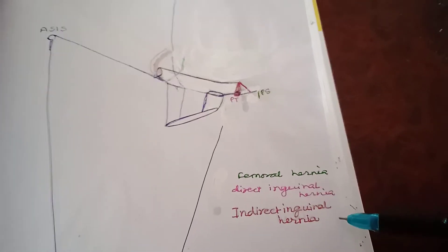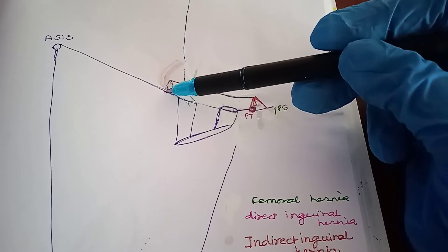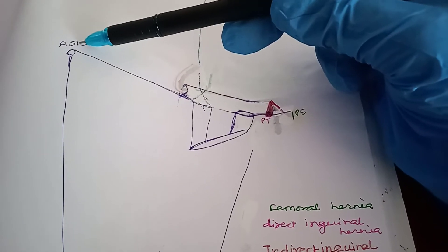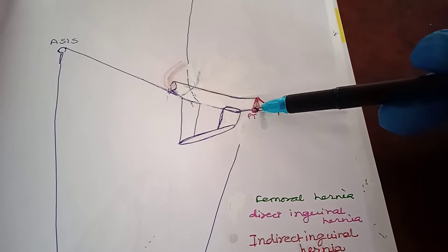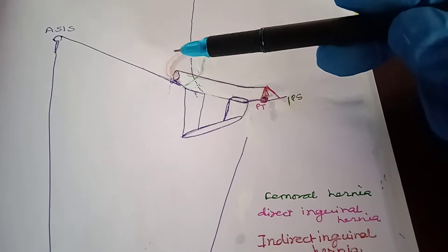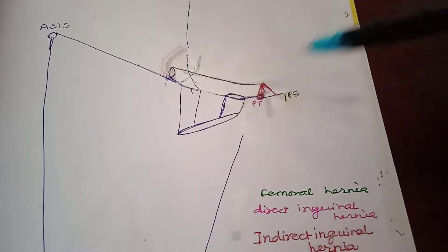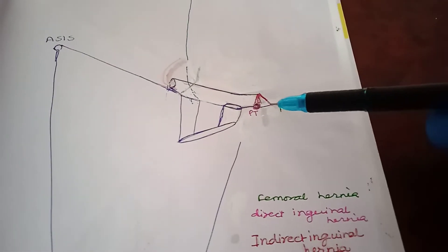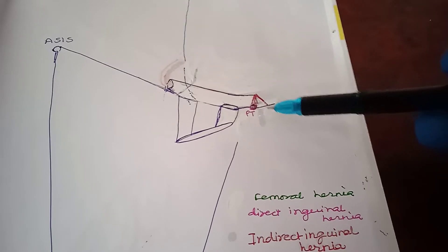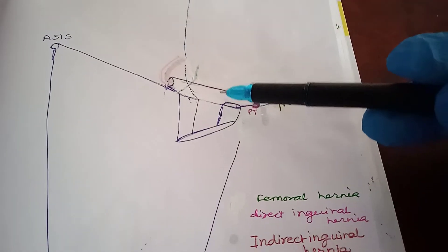Indirect inguinal hernia occurs when abdominal content enters the deep inguinal ring. The deep inguinal ring is at the level of the midpoint of the inguinal ligament, which extends from the anterior superior iliac spine up to the pubic tubercle. The midpoint of this ligament is the surface marking for the deep inguinal ring. When abdominal content enters through the deep inguinal ring and remains inside the inguinal canal, it is incomplete indirect inguinal hernia.